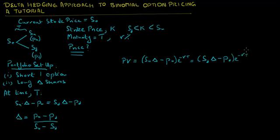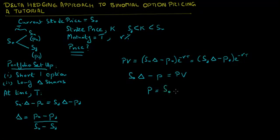The cost of setting up this portfolio today must equal the current stock price times delta minus the price of this option today. Under no arbitrage, this must equal the present value of the portfolio we just computed. Solving for the price of the option P, we get P equal to the current stock price times delta minus the present value of the portfolio. This is the price of the option today.